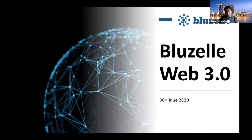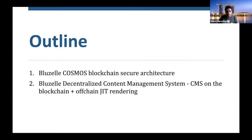We did an ICO in 2018, and it was centered around our decentralized database. I'm going to talk about that to start with, and then I'll move into our off-chain product. I'm going to start with Cosmos — we're using Cosmos — and talk about our blockchain secure architecture, and then I'll move into the main topic, which is our decentralized content management system, or DCMS, which uses our blockchain combined with off-chain, just-in-time rendering of the content.